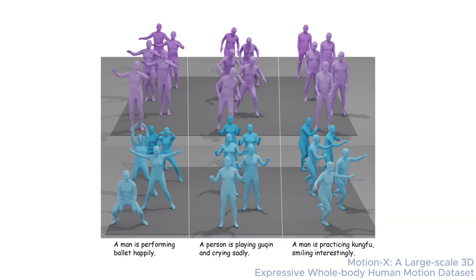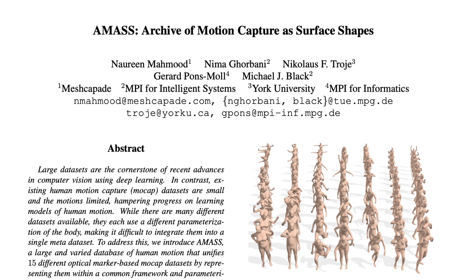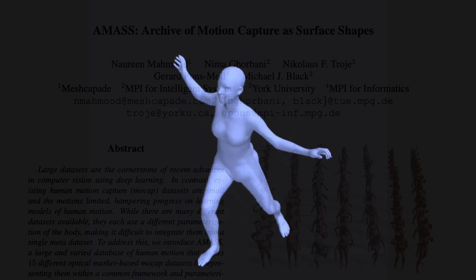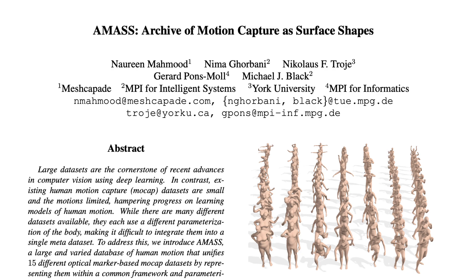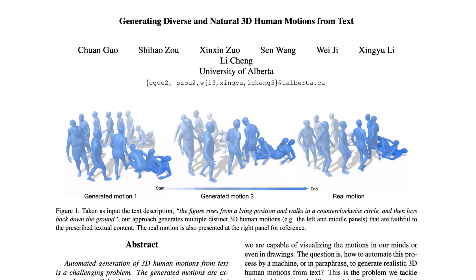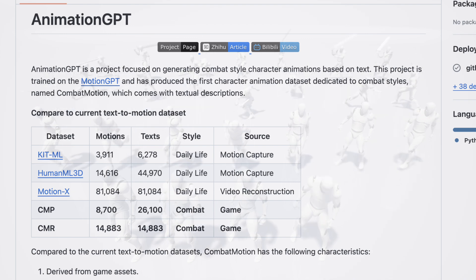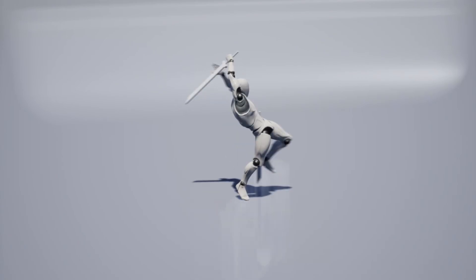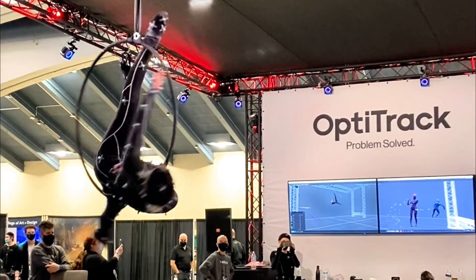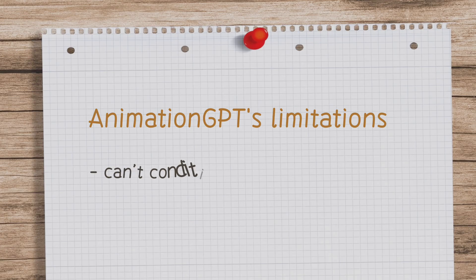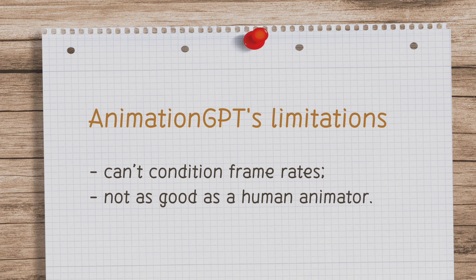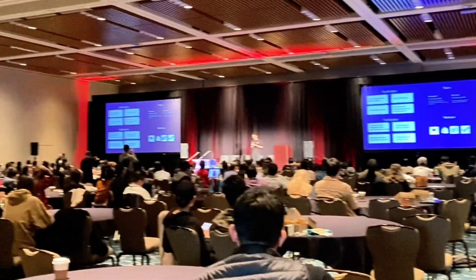Each dataset can use a skeleton with a different number of joints, different joint indices, or a different default pose. In 2019, the Max Planck Society used optical motion capture methods to produce the AMASS dataset with 11,000 daily human activities. In 2022, HumanML3D expanded this to 14.6 thousand actions. On top of these, the dataset by the AnimationGPT team is a great complement, as AnimationGPT can generate anime-style expressive gestures specific to games, which are otherwise impossible to obtain via regular motion capture. The dataset still has limitations — for example, it cannot condition on frame rates or offer control like a human animator. AI is not as good as humans yet, but it can help human developers make games faster.